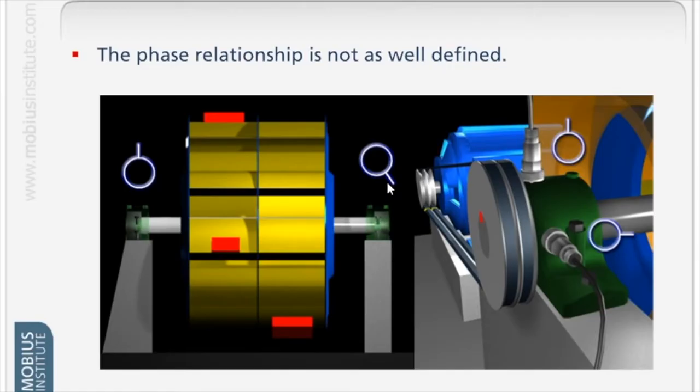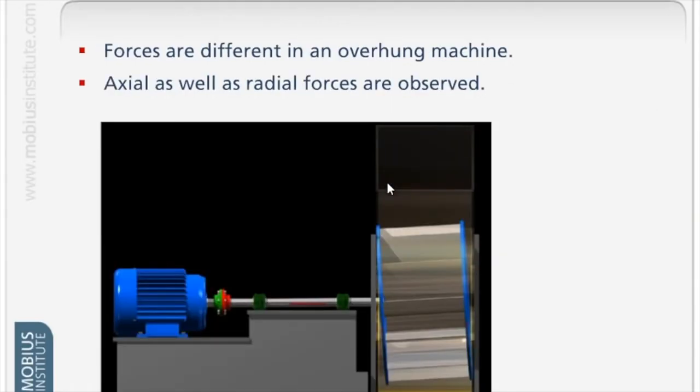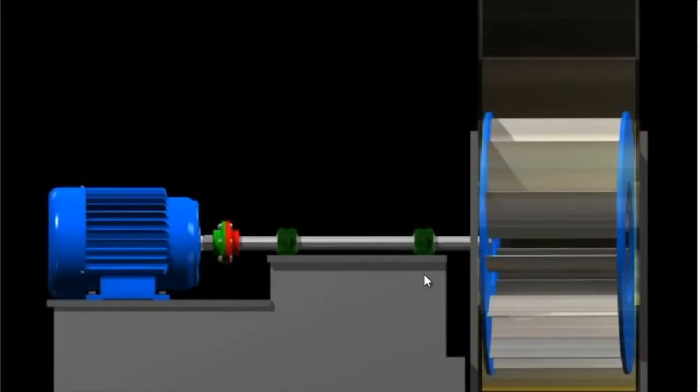Phase really helps us to understand not only what's wrong with the machine but in this instance how to balance it. If I have an overhung rotor, not only do I get the circular motion that we just saw but we also get a rocking motion. Let's have a look.